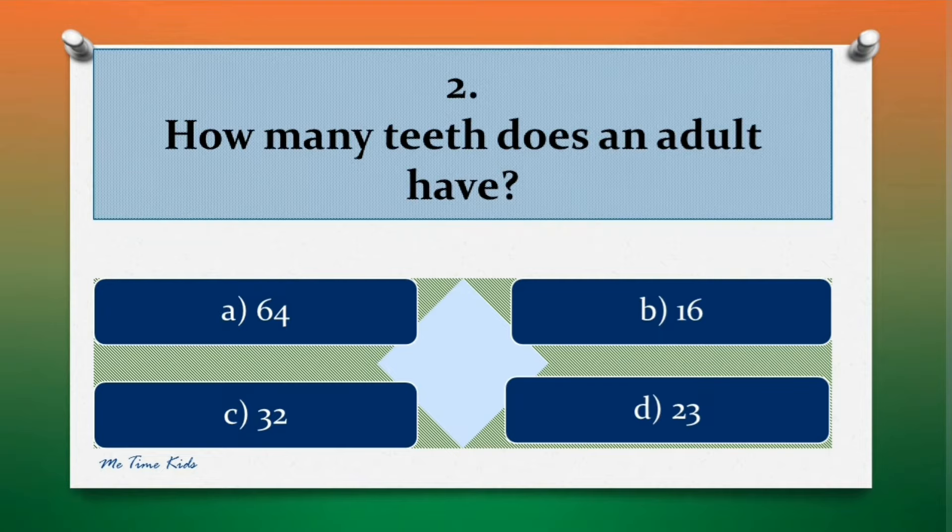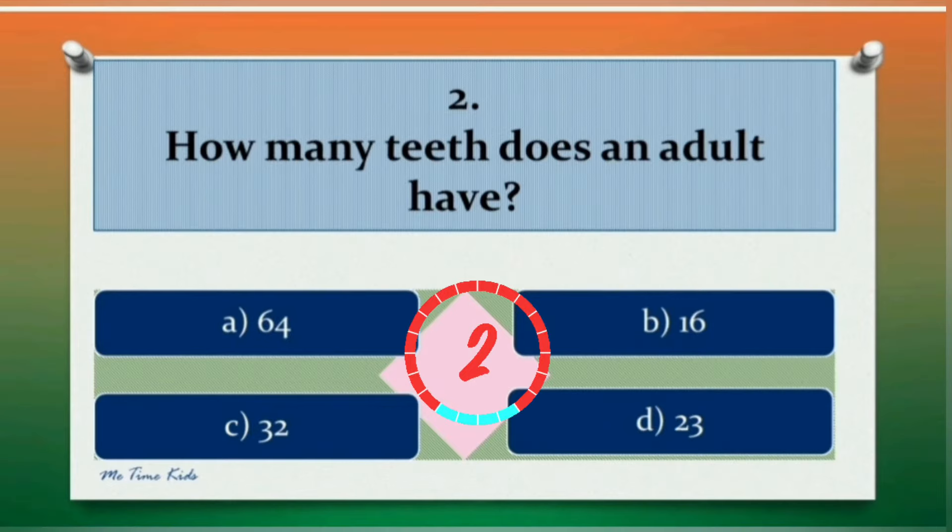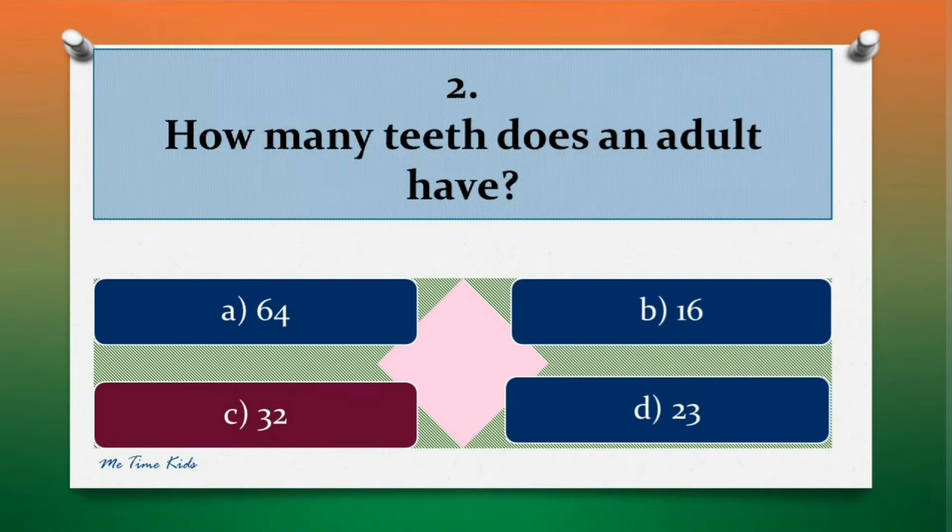Question 2. How many teeth does an adult have? Options are: a. 64, b. 16, c. 32, d. 23. Correct answer is c. 32.